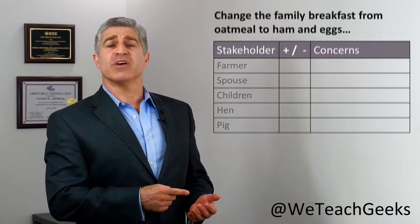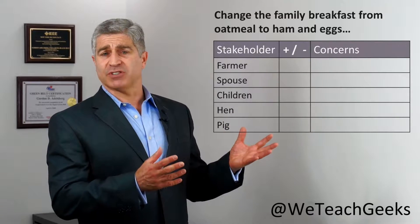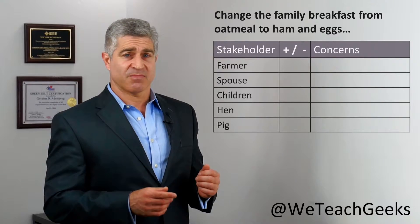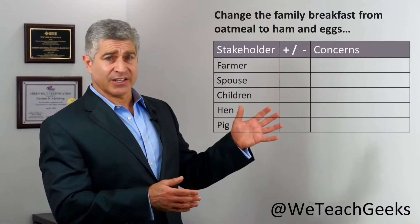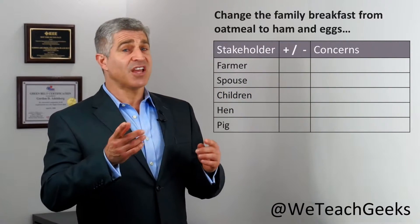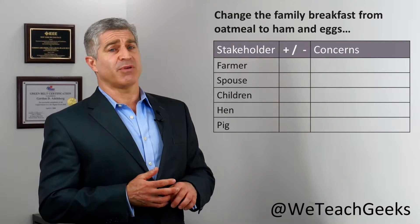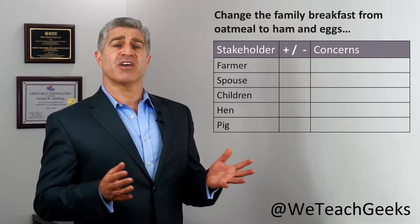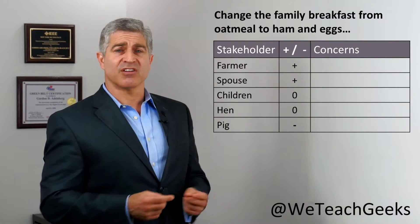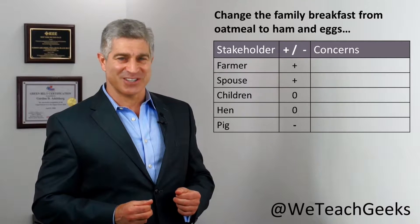Let's start with all the people involved. We have the farmer, the farmer's spouse, the kids, the hen, and the pig. So we've got our list. Next, are these stakeholder groups going to be for this change? Are they going to be neutral? Are they going to be against it? We can fill in this column — and look at the pig. He's going to be a big-time resister.